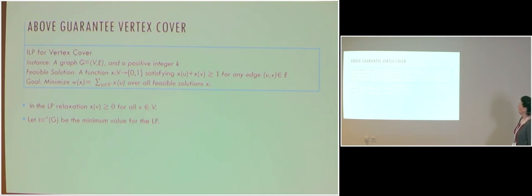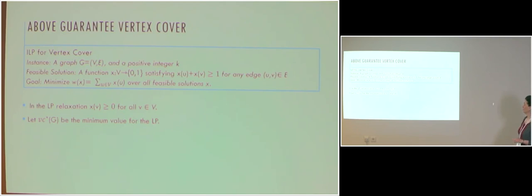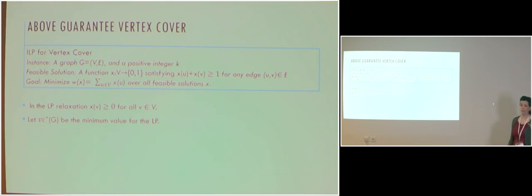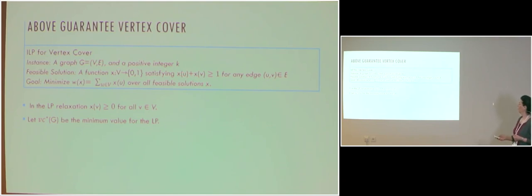In the integer linear program for vertex cover, we are given a graph G and a positive integer K. A feasible solution is an assignment of x_v to any vertex v in the graph. The constraint is that for any two vertices u and v connected by an edge, x_u plus x_v is at least 1. We want to minimize the total sum of the x_u values over all feasible solutions.